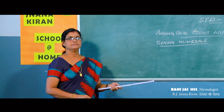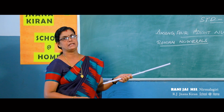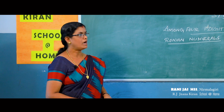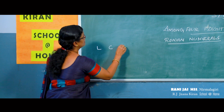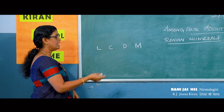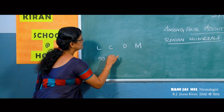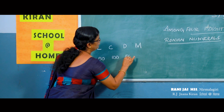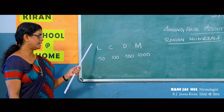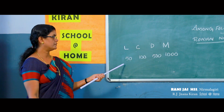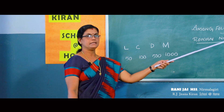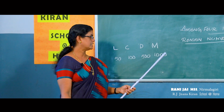In the starting I said that we use 7 English alphabets to denote Roman numerals. Here we used only 3 letters. The other letters are L, C, D, and M. L stands for 50, C for 100, D for 500, and M for 1000. All of you write the notes neatly without any mistake. I think all of you understood this.